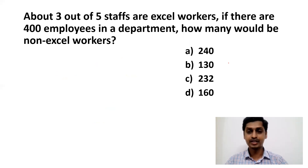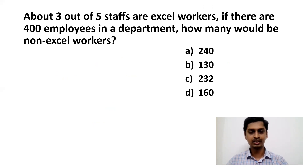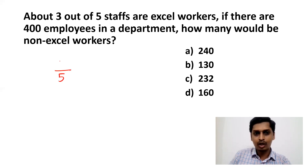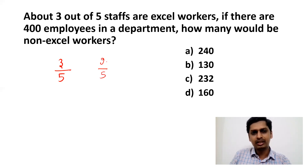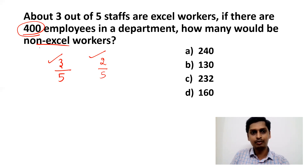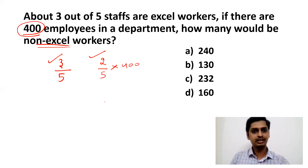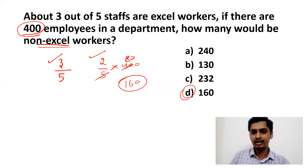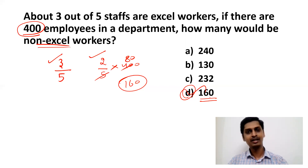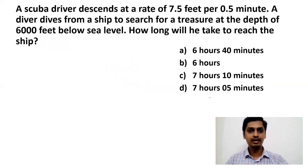Next question: About three out of five staff are Excel workers. If there are 400 employees in a department, how many would be non-Excel workers? Out of five, three work in Microsoft Excel, so the remaining two are non-Excel workers. Two out of five of 400: (2/5) × 400 = 160. So 160 people are non-Excel workers. This is a straightforward question.